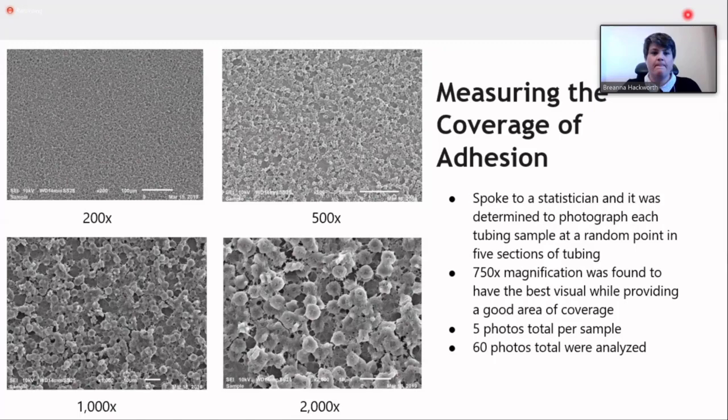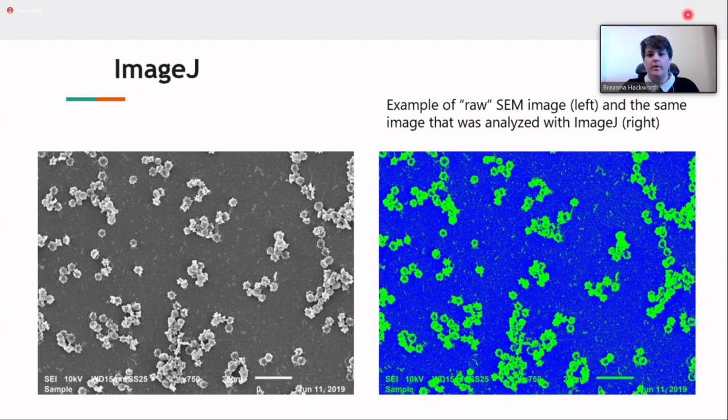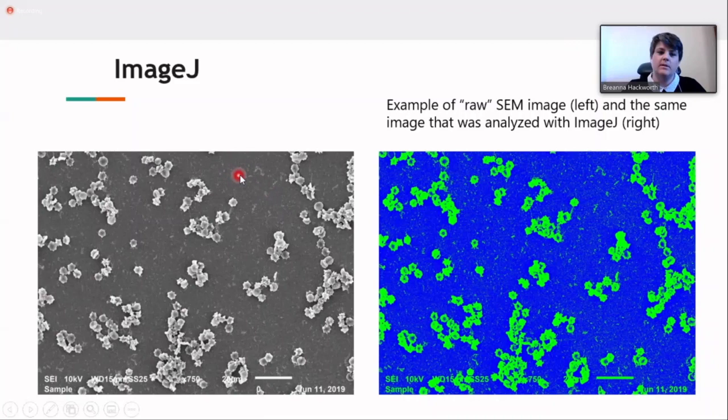How did we analyze this data? We used an image software called ImageJ. It was recommended by Dr. Mitchell, who uses this software quite a bit. How ImageJ works—it uses color differentials in order to show a base, and then also anything that's on top of that base. You could see the dark here on the left-hand side would be the base of the tubing, and any of the white are the adhesions that you would see. On the right-hand side, this image is the image that had been run through ImageJ, and it'll give you a percentage of that adhesion.